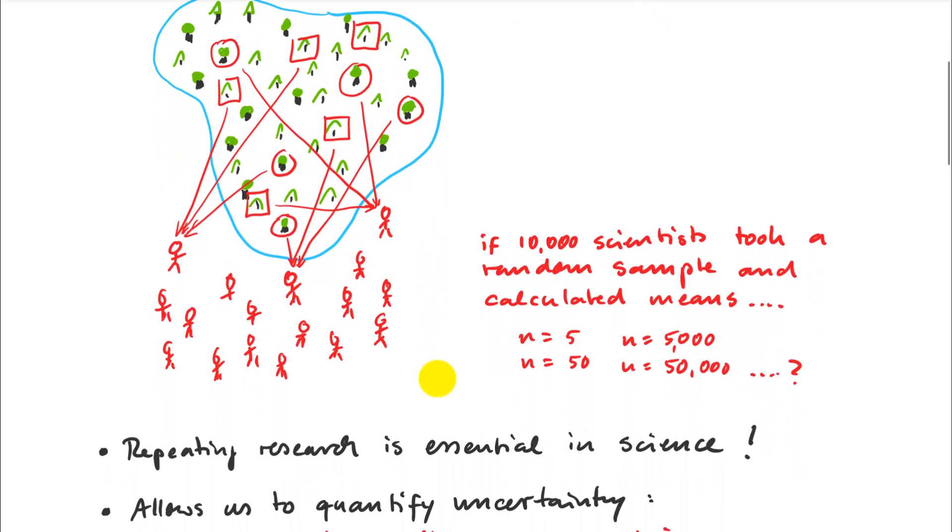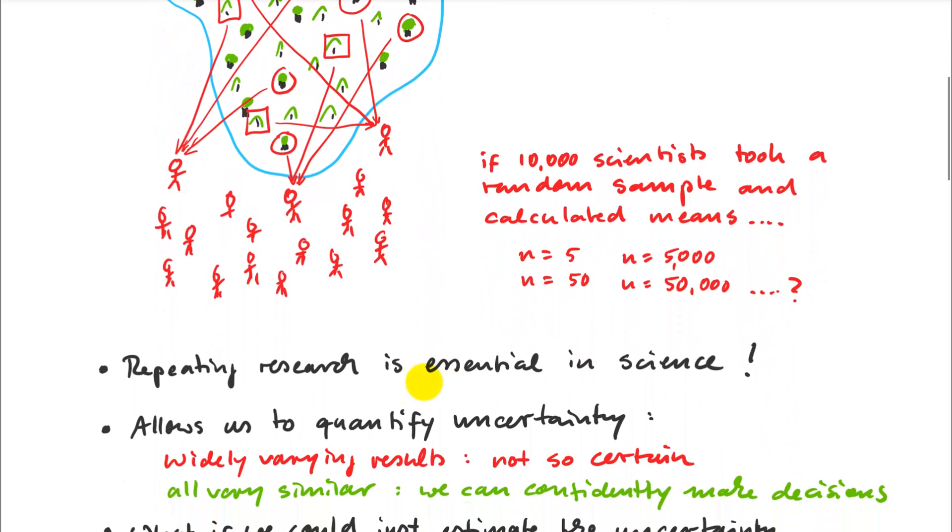So that's why repeating research is essential in science. And it allows us to quantify the uncertainty. So if we get widely varying results from different investigators, we can't be so certain. If they all get very similar results, then we confidently can make decisions.